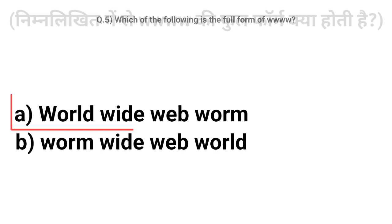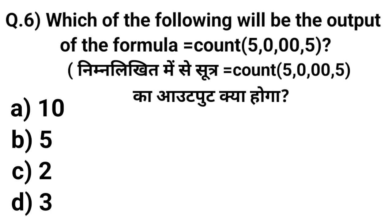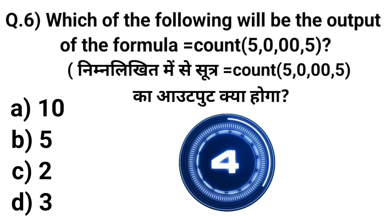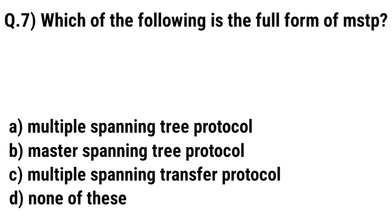Question 6: Which of the following will be the output of the formula ISCOUNTA(5, 0, 00, 0, 5)? In Hindi: Sutr ISCOUNTA open bracket 5, 0, 0, 0, 5 close bracket ka output kya hoga? Right answer option is B — 5.